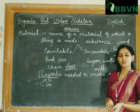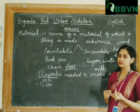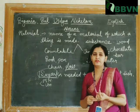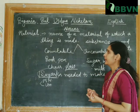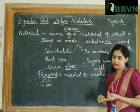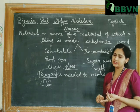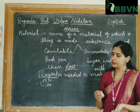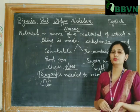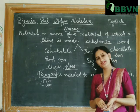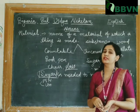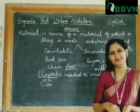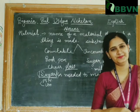Nouns are mainly of five kinds: proper noun, common noun, then we have read about collective noun, then abstract noun, and the fifth one was material noun. So this is it for today. In our next video session we will start a new chapter. Thank you so much everyone.